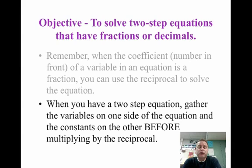When you have a two-step equation, gather the variables on one side of the equation and the constants on the other before multiplying by the reciprocal. That really deals with step three of our steps that we follow for solving equations, so we don't have to worry about that too much today.